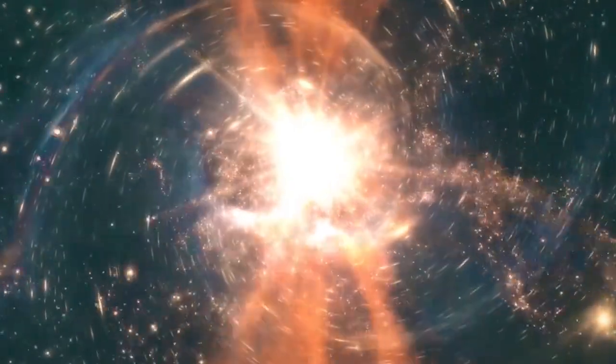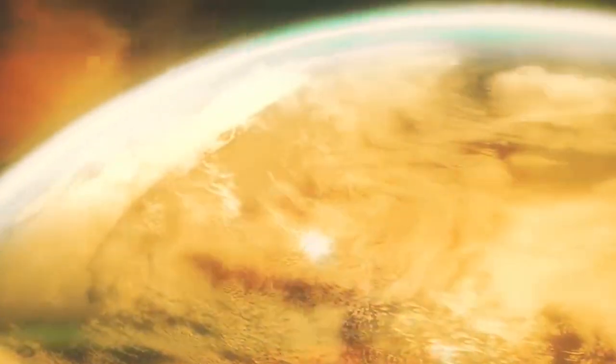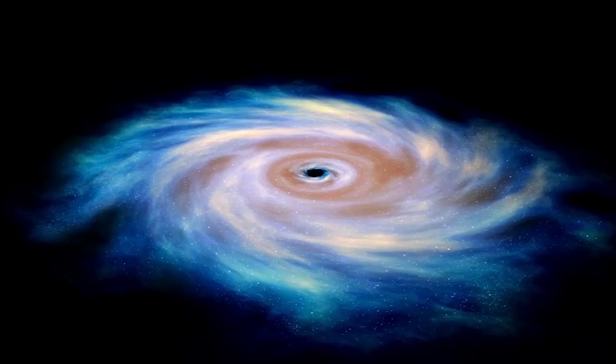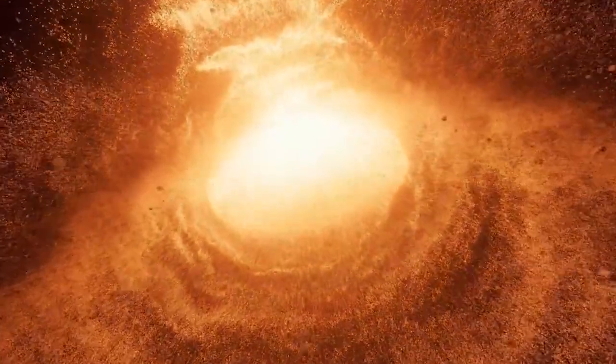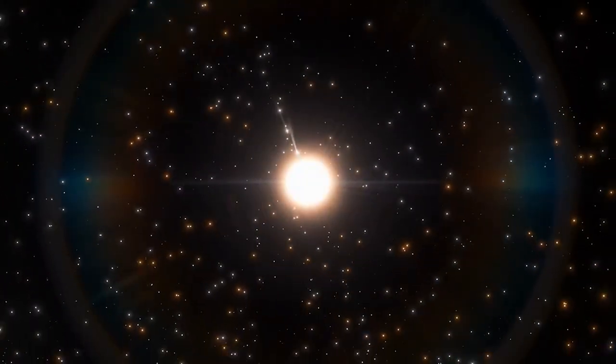A quasar is a form of the active galactic nucleus that is a compact area at the heart of the galaxy with a supermassive black hole. The quasar is illuminated by gas falling into a supermassive black hole, making it brighter than all the stars in the galaxy.